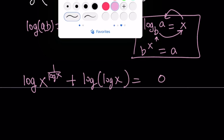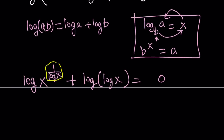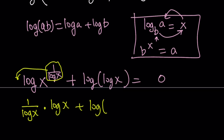Now let's look at this carefully. Note that we can move the exponent to the front, because we have a power inside a log. That's why we're logging both sides — because you don't want variables in the exponent, you want to bring them down. So now you're going to get: 1 over log x multiplied by log x, plus log of log x, equals 0.